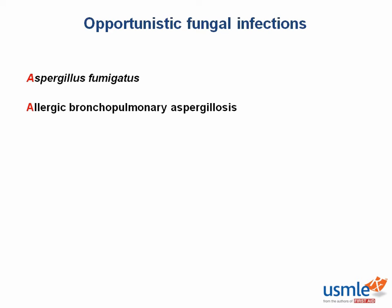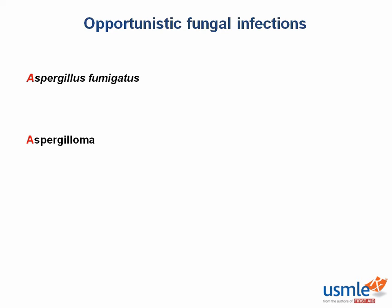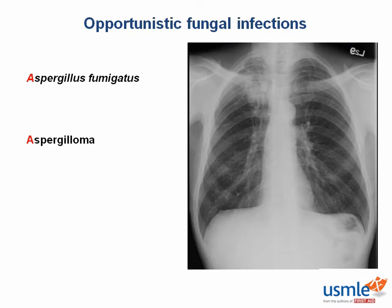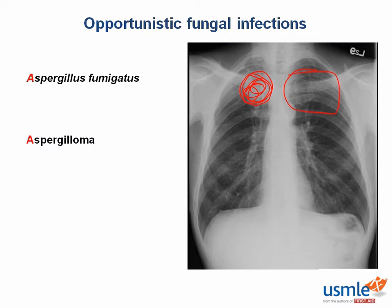Aspergillus can also grow inside existing lung cavities and form what is known as an aspergilloma, or fungus ball. Tuberculosis can cause cavitary lung lesions, which are prime real estate for aspergillomas to form. Radiographically, you will see a large round focus within a cavitary lesion. If the patient changes position, so will the fungus ball. On imaging, look for asymmetry — there will be an opacity on one side that does not appear on the other.